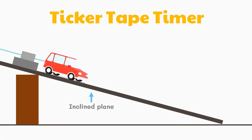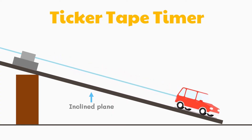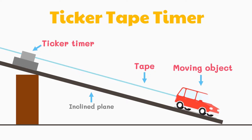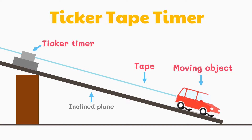Before the advent of computers in physics labs, a common way of analyzing the motion of objects was to perform a ticker tape analysis. A long tape was attached to a moving object and threaded through a device that placed a tick upon the tape at regular intervals in time. As the object moved, it dragged the tape through the ticker, thus leaving a trail of dots. The trail of dots provided a history of the object's motion and a representation of the object's motion.